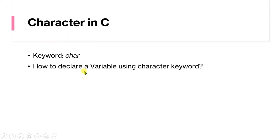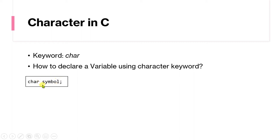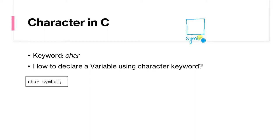How do we declare a variable using the char keyword? Just like in the last class where we talked about the integer data type, to declare a variable you write the data type followed by the variable name. So here we write: char symbol. The data type is char and the variable name is symbol. After the compiler allocates memory, that particular location will be identified as 'symbol'. One space is allocated in memory and that space is referred to as 'symbol'.